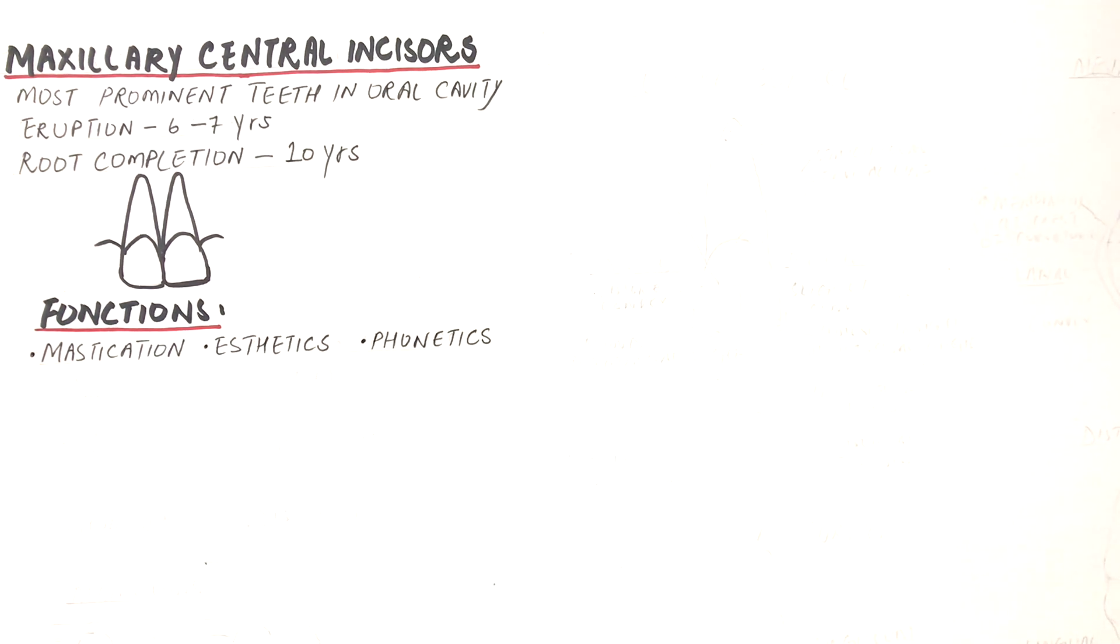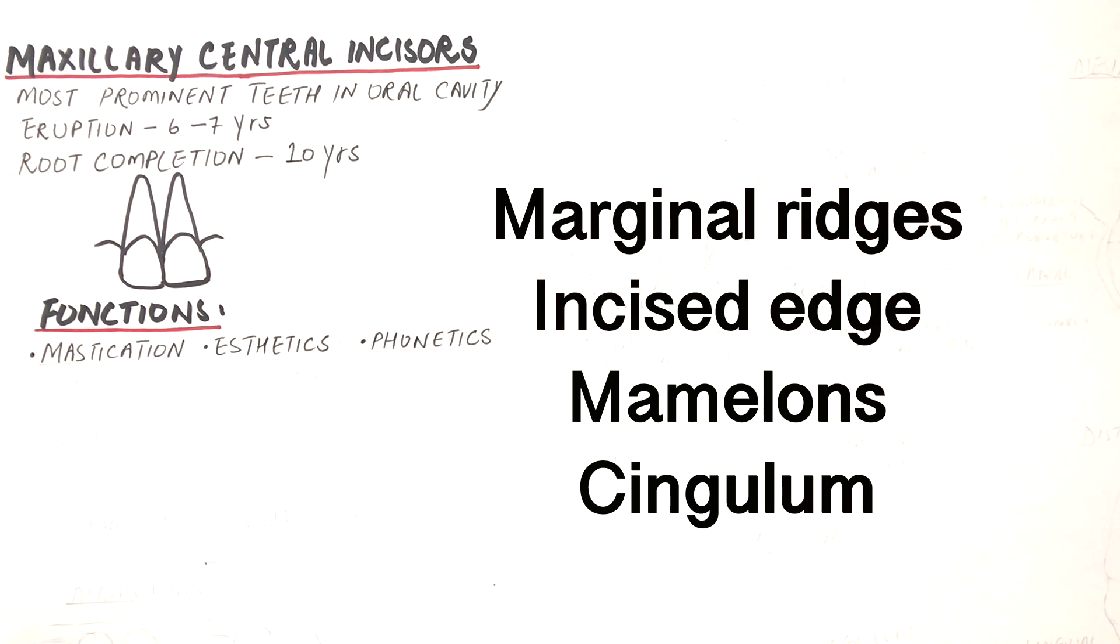Four features of incisors which help us in differentiating the crowns of incisors from the crowns of other permanent teeth include their position and angulation of marginal ridges, their incisal edge, mamelons, and cingulum.